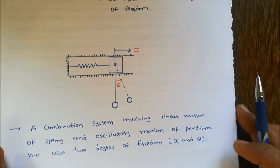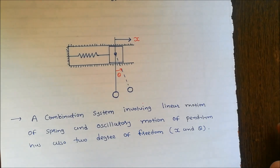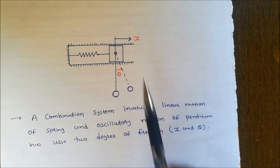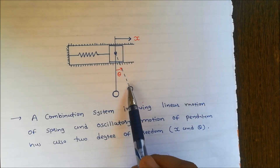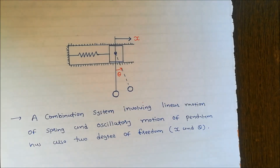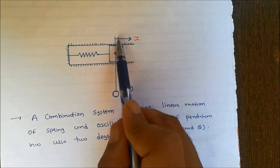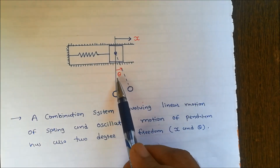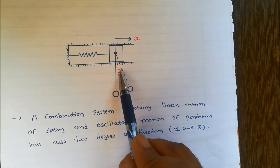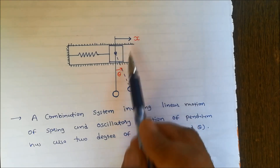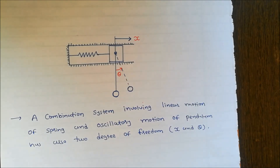We take another example for two degrees of freedom: a combination of a system involving linear motion and the oscillating motion of a pendulum. Here it is a combination of linear motion and pendulum oscillating motion. To specify the motion we require two coordinates, x and theta, so the system has two degrees of freedom.